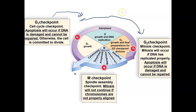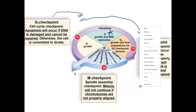Once the G1 checkpoint is passed, DNA is replicated through S phase and we move to the G2 checkpoint — ensuring the cell is ready to go into mitosis. They check to make sure that the DNA was replicated properly. If the DNA is damaged and the cell can't fix itself, it will undergo apoptosis.